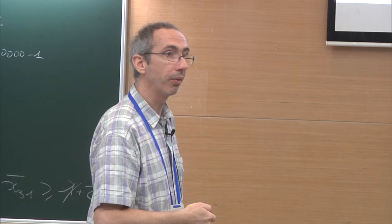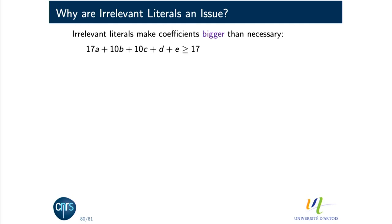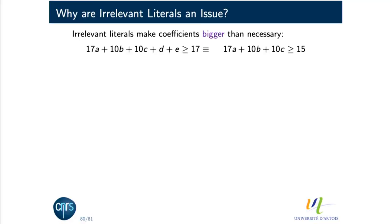There are also irrelevant literals in rounding SAT, though fewer than in SAT4J. If we can detect irrelevant literals, we can simplify: because irrelevant literals don't affect satisfiability, we can assign them to satisfy the constraint and reduce the degree. Then we can apply saturation and potentially divide — getting a much simpler, tighter constraint.